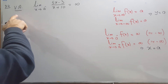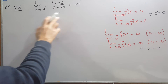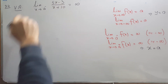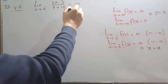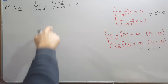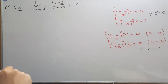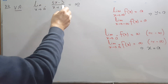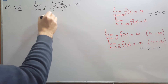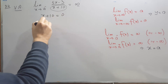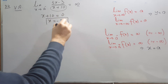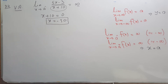To find the vertical asymptote, we need the limit as x approaches a (from the negative or positive side) of (5x - 3)/(x + 10) to equal positive or negative infinity. This happens when the denominator equals zero. Setting x + 10 = 0 gives x = -10, so x = -10 is the vertical asymptote.